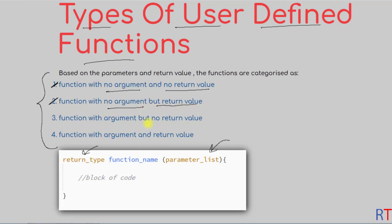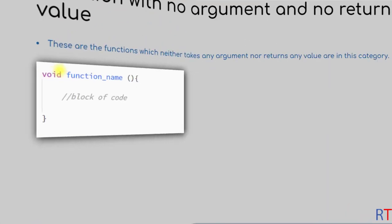The third category of functions takes an argument but does not have any return value. The fourth category takes an argument and also returns a value. So these are the four types of user-defined functions in C++.